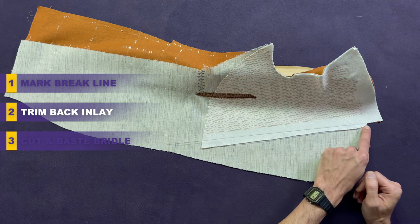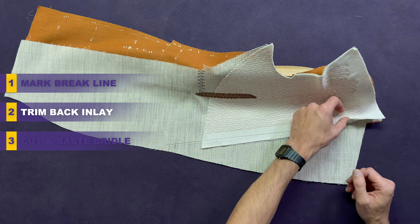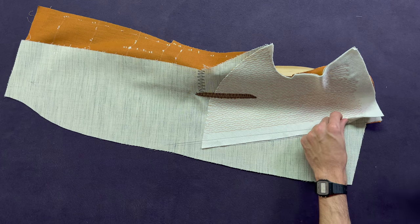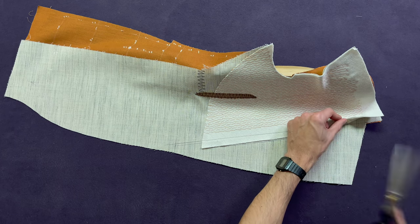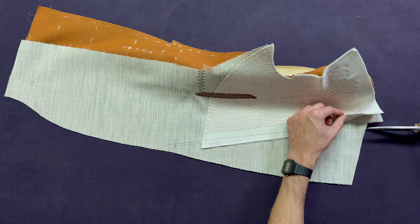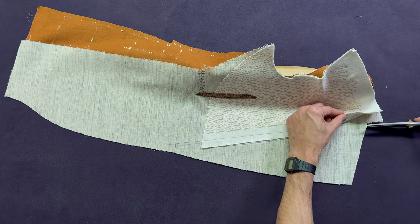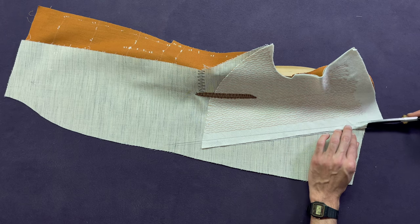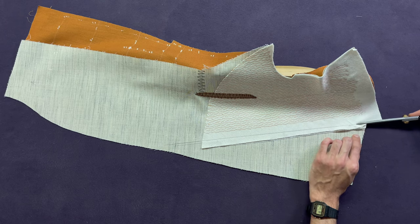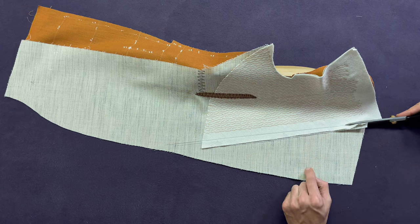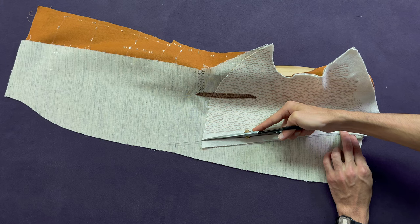What I want you to do now is to cut only your horsehair and your domette on that brake line mark. Be very, very careful that you don't cut your lapel. If that happens, you're going to have a tough time. Be paranoid and triple check. Cut the horsehair and the domette. Not the canvas, the horsehair.